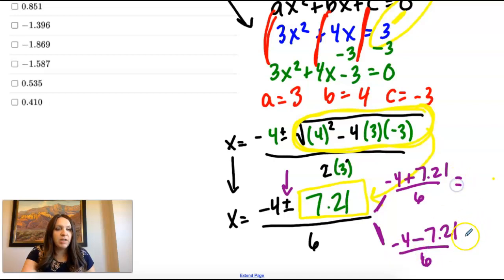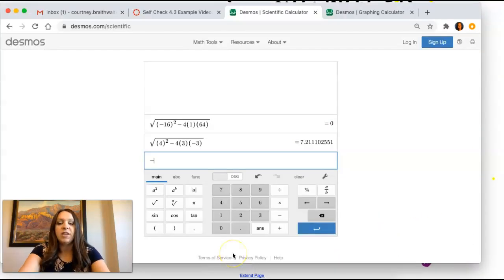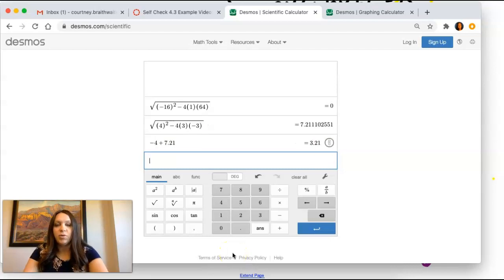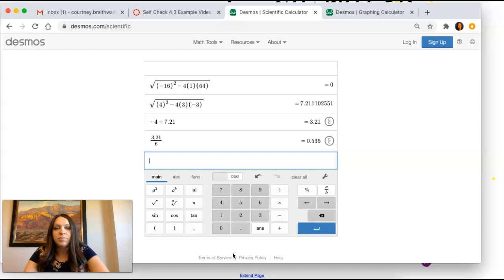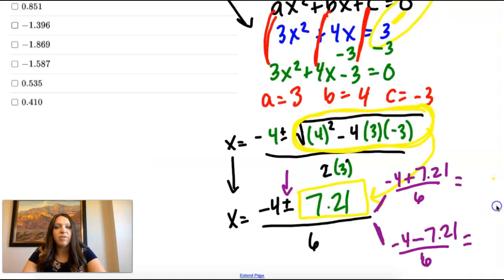And we're going to calculate that. So when I calculate that, I first have to do, find out the numerator. That's order of operations. And then divide by the 6. So 0.535.